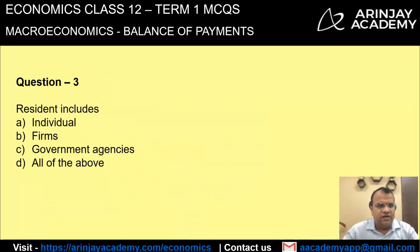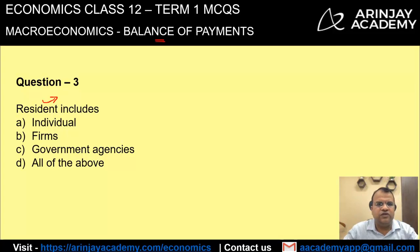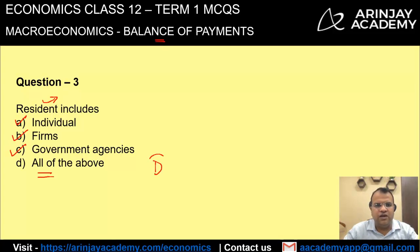Regarding who qualifies as a 'resident' for the purpose of balance of payment: it includes individuals, firms, and government agencies. Therefore, the correct answer is option D — all of the above.